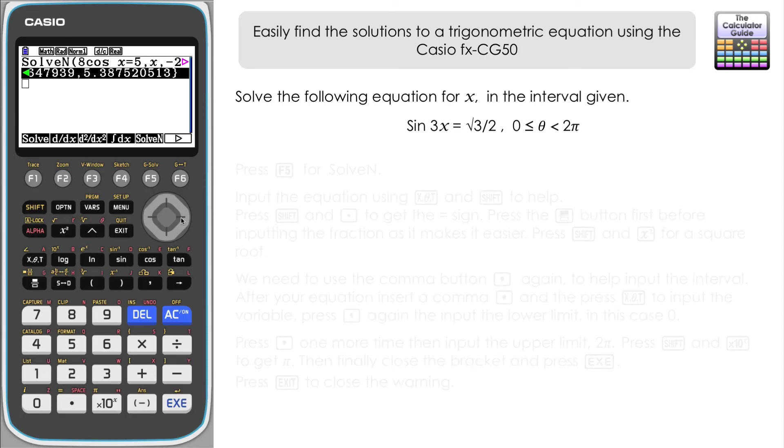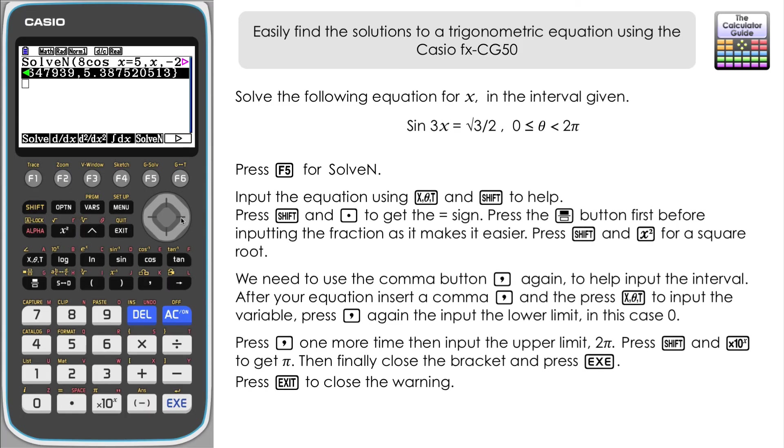So we just need to press SolveN to get started again, or navigate down first to get to the new line. SolveN - if you'd come away from the menu here, it's Option and F4 for Calc and then SolveN at F5. And we need to set it up in the same way again. So equation is sin(3x). This time it is in terms of x so we've got the right letter straight away.